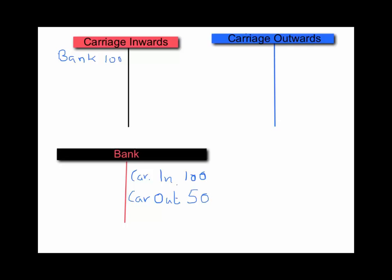Why? Because it's a payment that is made as a result of something being sold or sent out of our business. So again, it would go on to the debit side of your carriage outwards as an expense. And the difference really is that carriage inwards is for your suppliers and carriage outwards is for your customers.